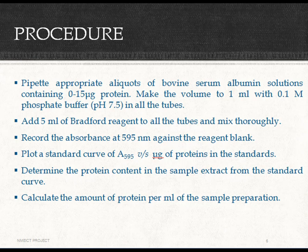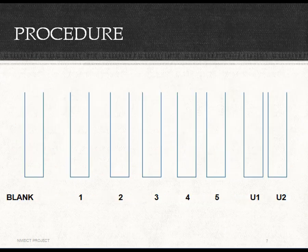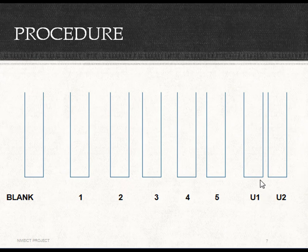Calculate the amount of protein per ml of the sample. For the actual procedure, take 8 test tubes: mark one as blank, tubes 1 through 5 for preparation of the standard curve, and two unknowns marked as U1 and U2.